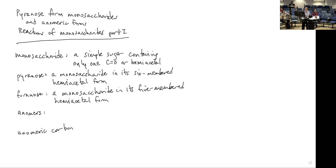A monosaccharide will have either a carbonyl functional group — an aldehyde or a ketone — or it could also be in its hemiacetal form. Recall we just talked about hemiacetals in Chapter 9.